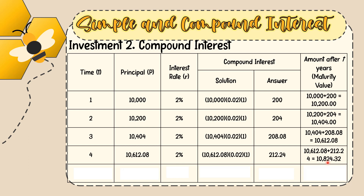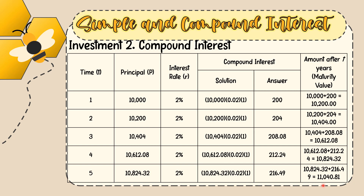For year 5 of compound interest, the principal is the previous maturity value of 10,824.32, with the same 2% interest rate. Solution: 10,824.32 × 0.02 × 1 = 216.49. So 10,824.32 + 216.49 = 11,040.81 pesos. This is the value of your 10,000 pesos after five years using compound interest.